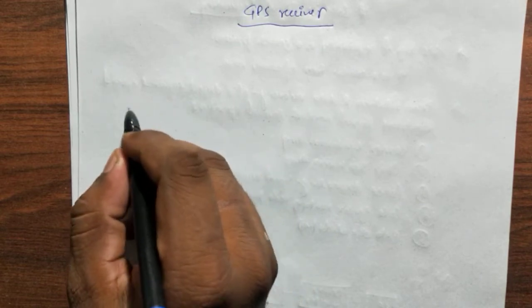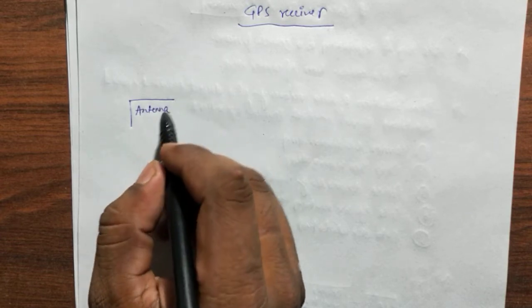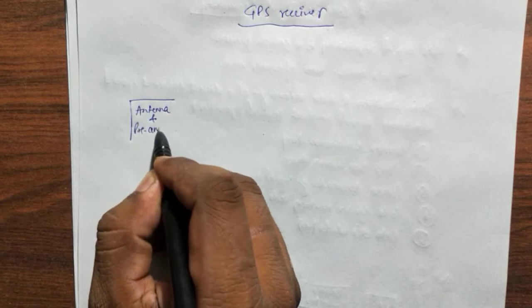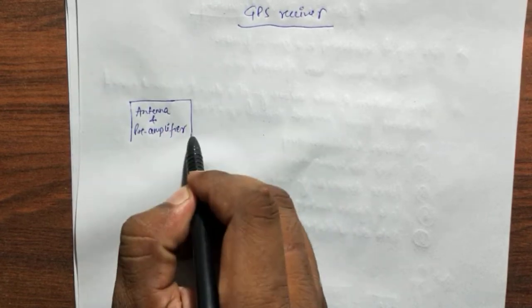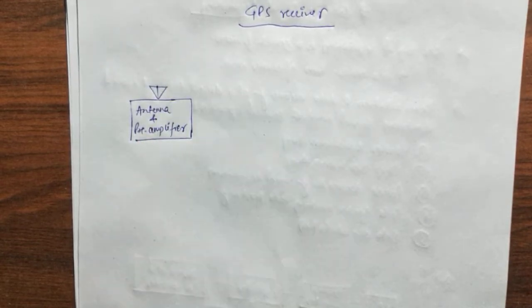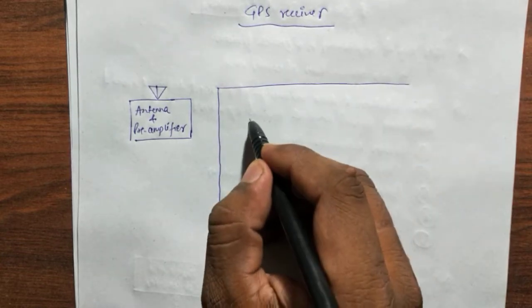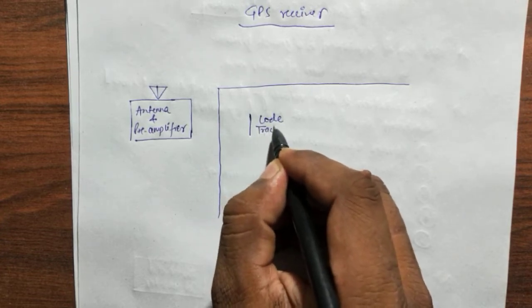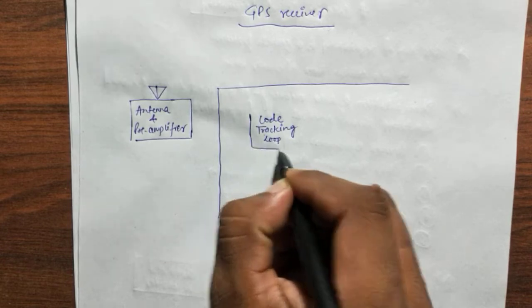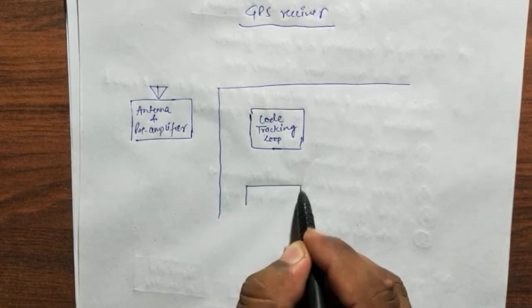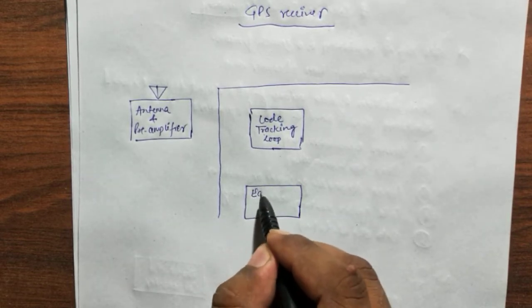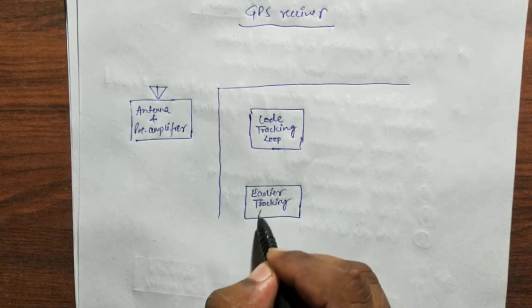While going through this GPS receiver, first of all let's draw a diagram of it. There is a section of antenna and that is pre-amplifier. This is the antenna. And here is the code tracking loop. Here we are using a carrier tracking loop.